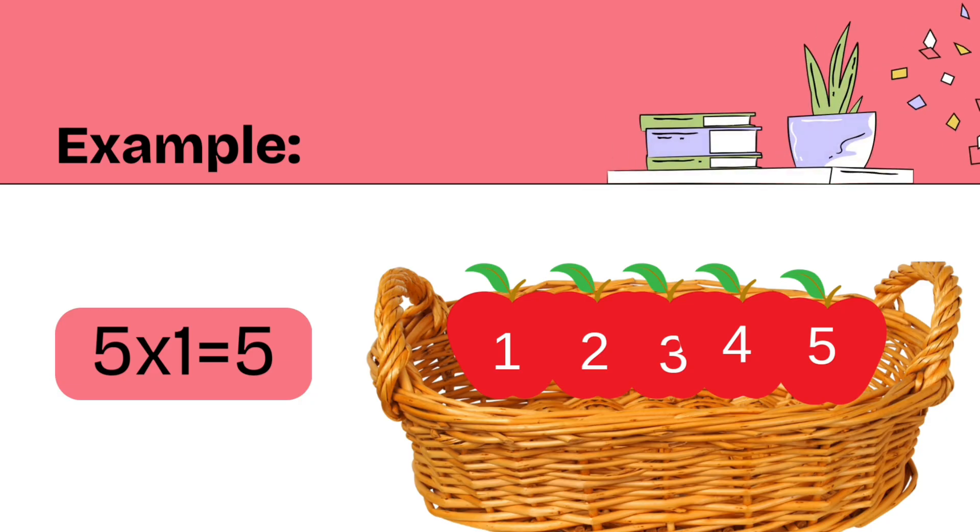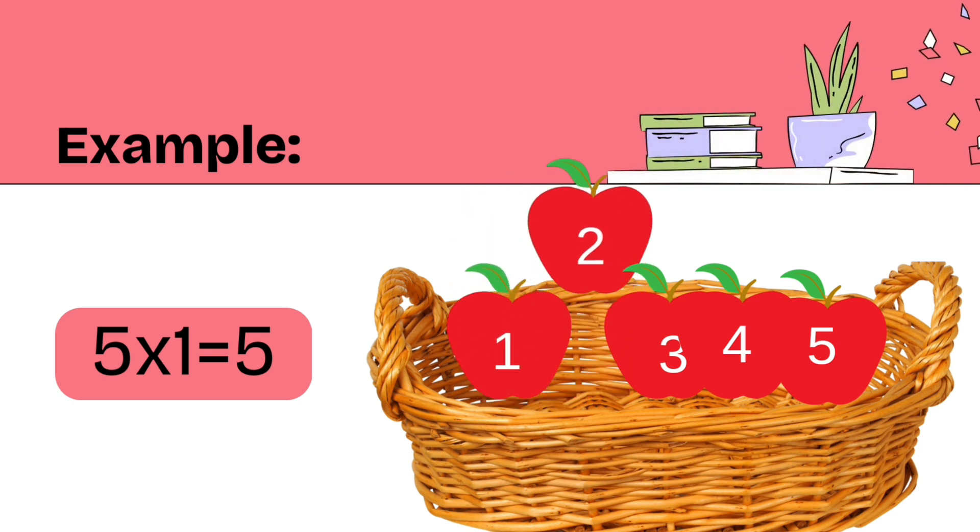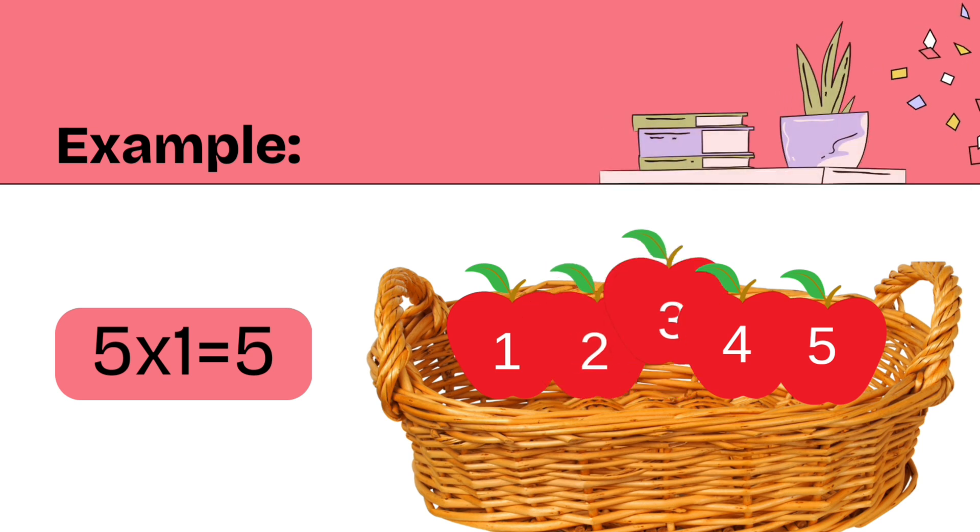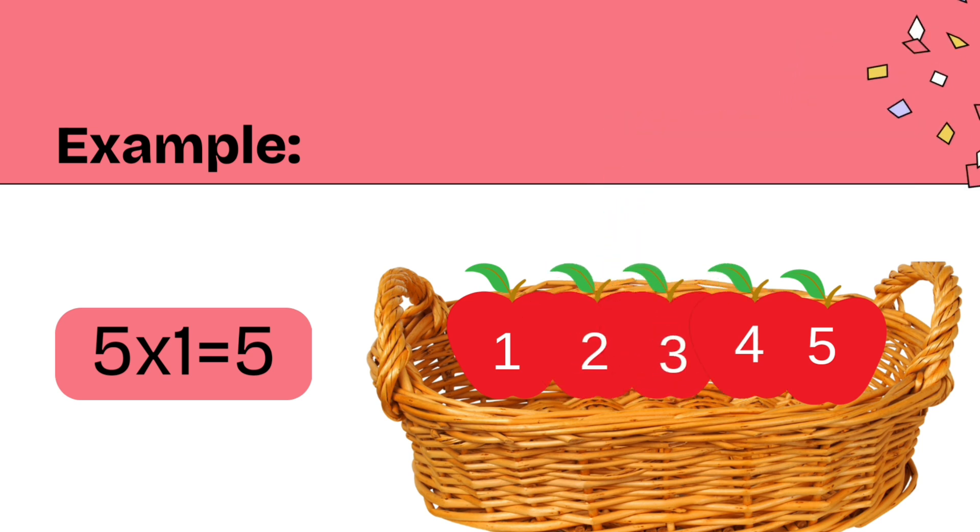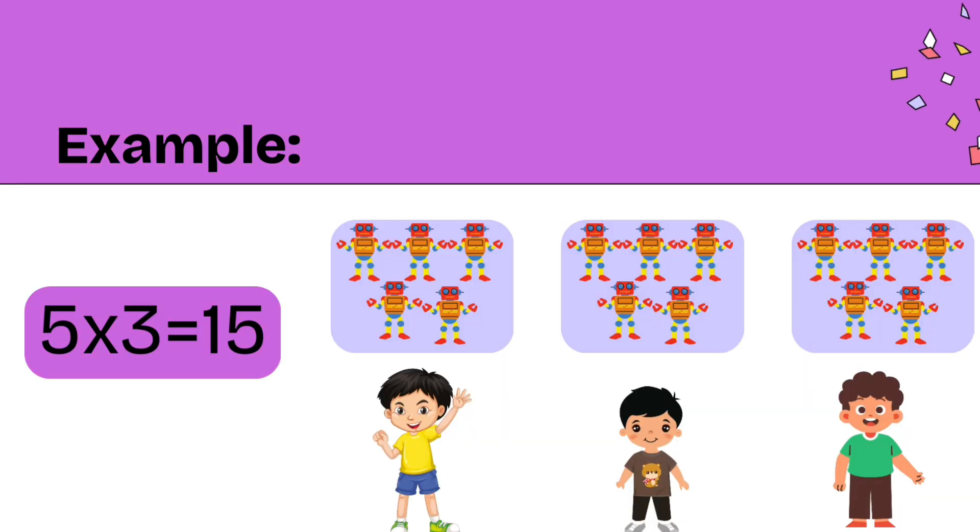Now let us break down some examples to understand how this works. Imagine you have one group of five apples. Visualizing helps us understand better. How many apples do you have? Let's count it together: one, two, three, four, and five. That's right! You have five apples. Let's have another example: 5×3=15.